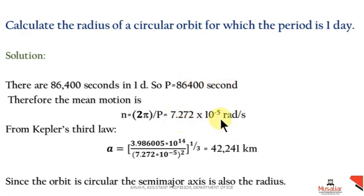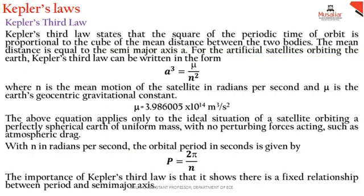From Kepler's third law we can write a³ = μ / n². And μ is equal to 3.98 × 10¹⁴ m³/s². By using this values, we can substitute in this equation.